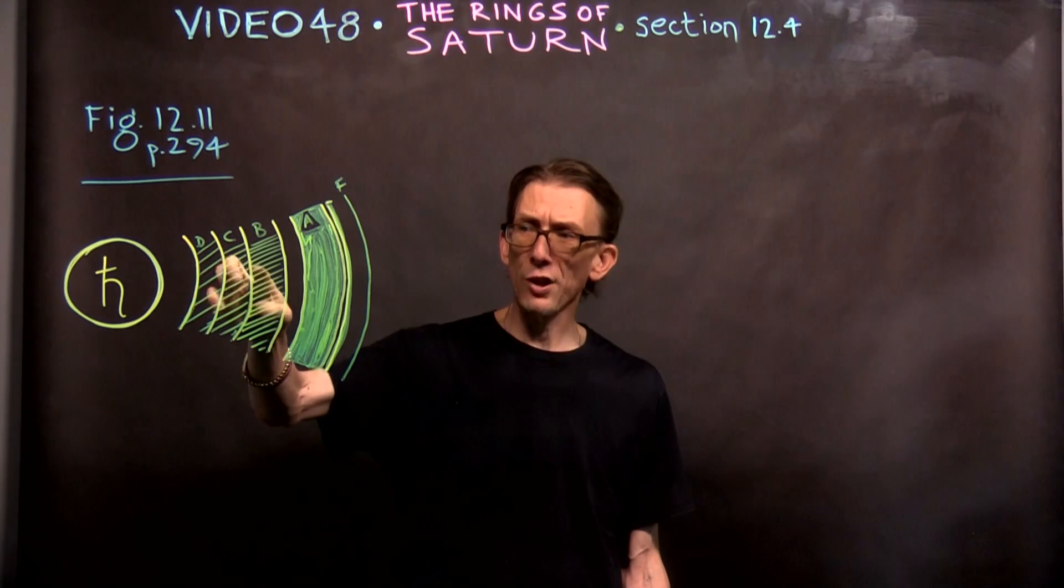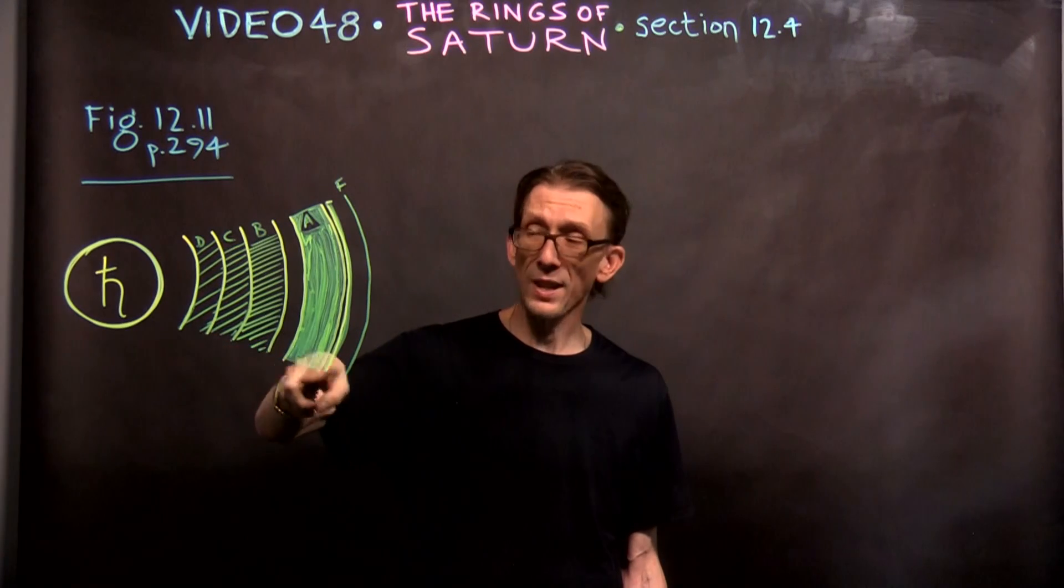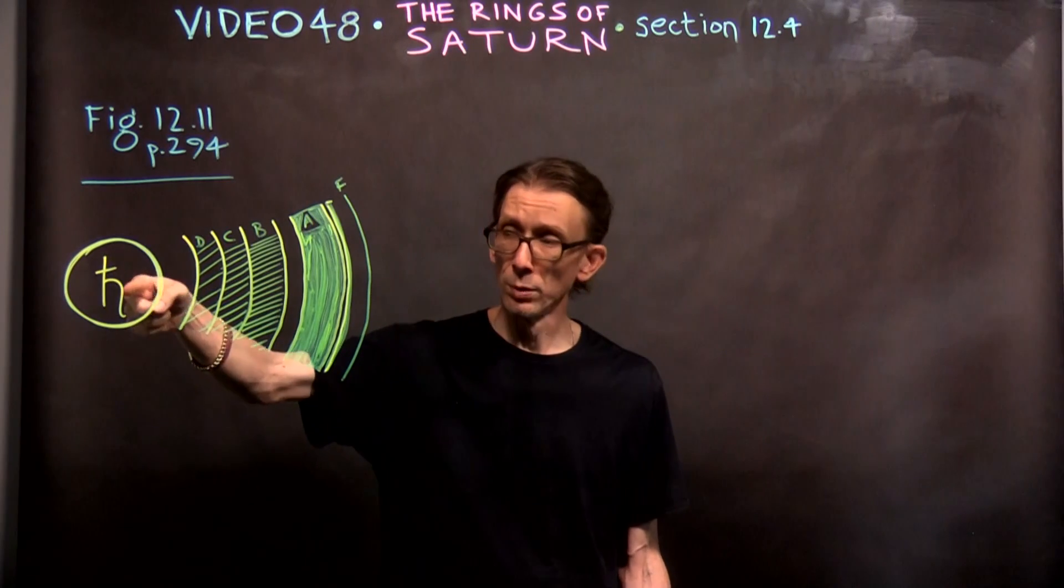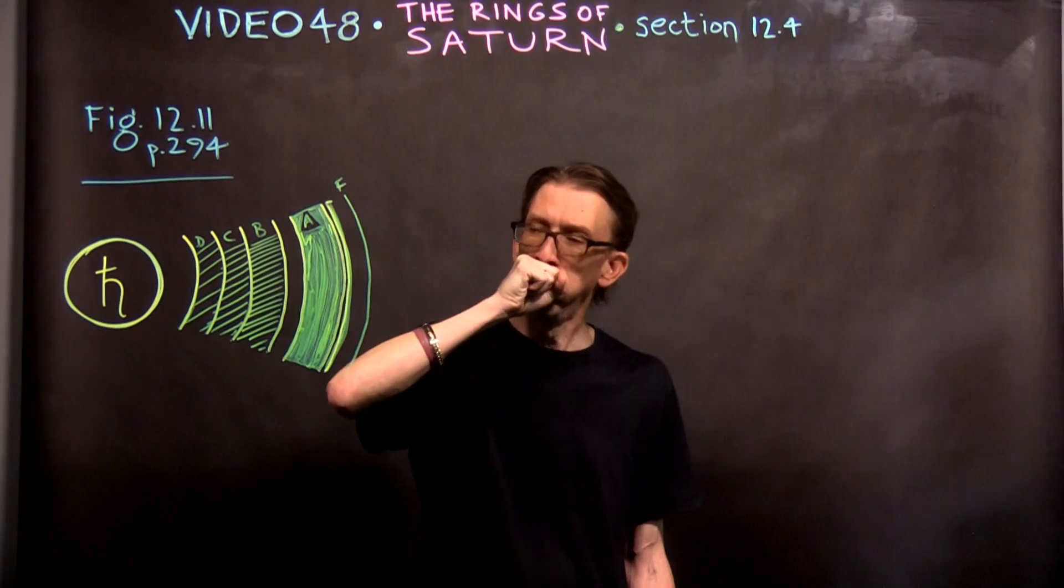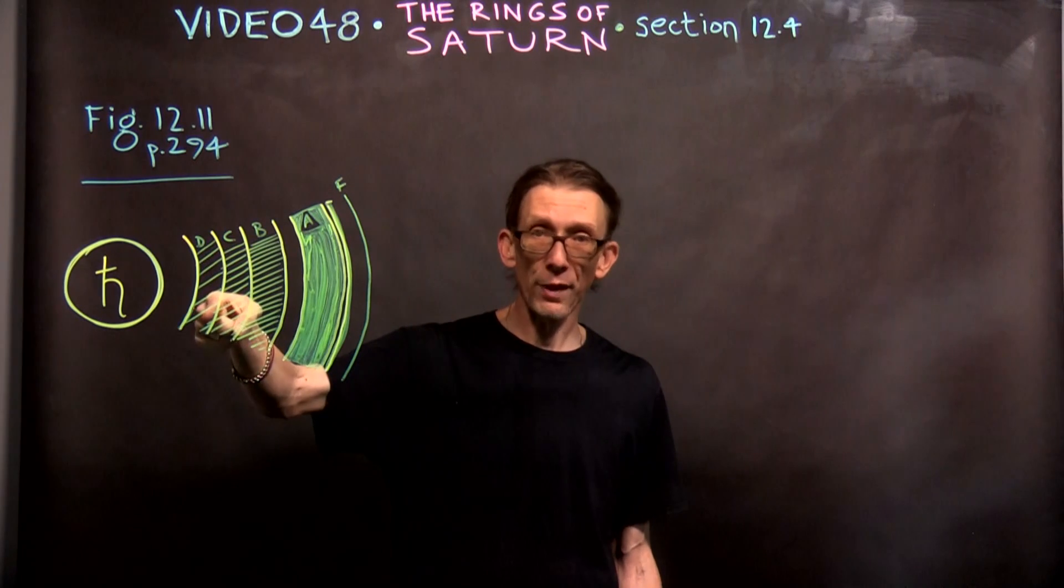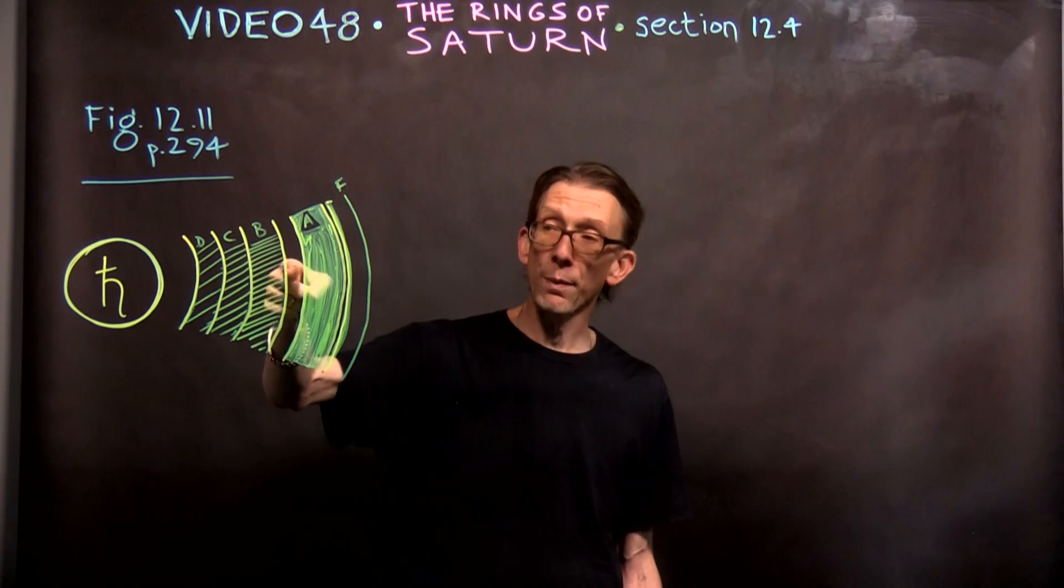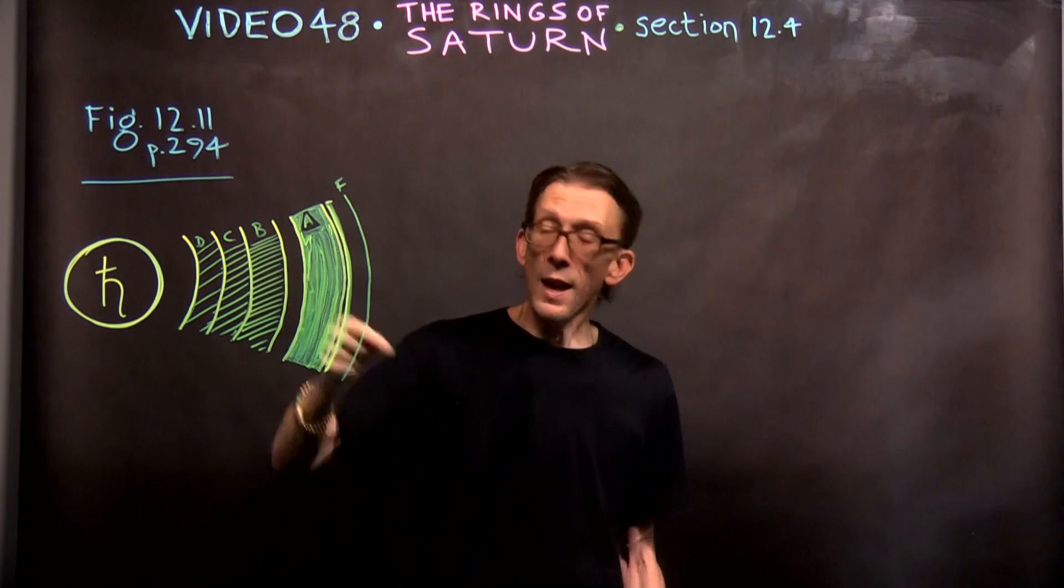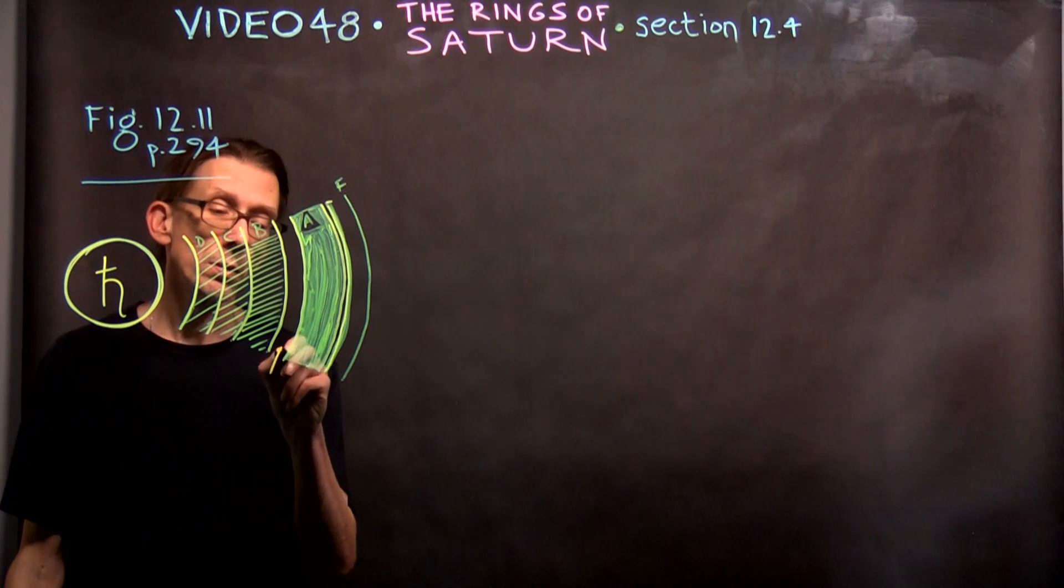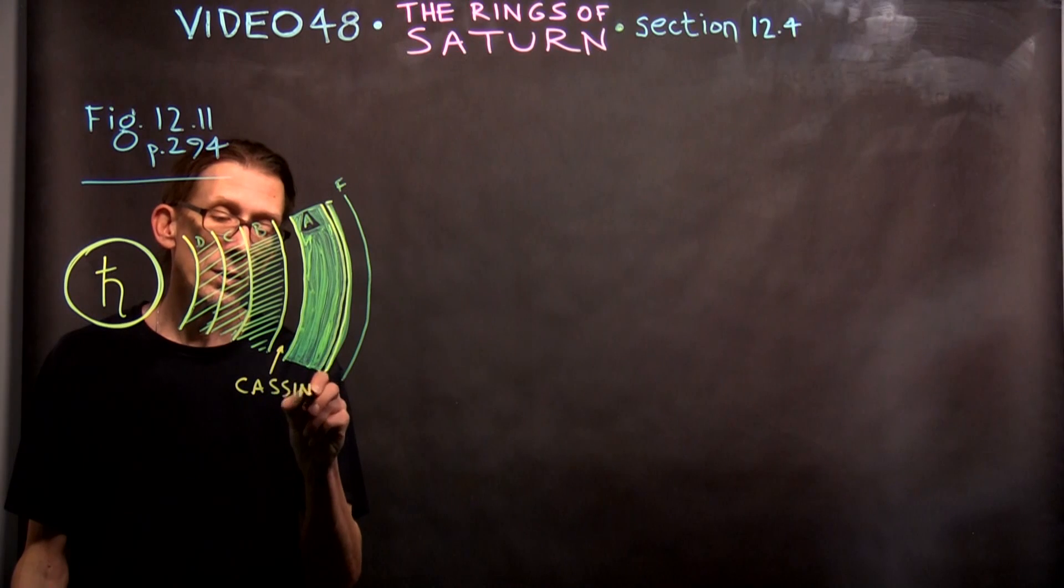This cross-hatching, I've tried to make them brighter as they move outward from Saturn. This is Saturn, the body of the planet itself, sort of looking down from the pole. D is the darker ring, and as we go to the C ring and the B ring, they get brighter and brighter. Then there's this huge gap between the B and A rings, known as the Cassini division.